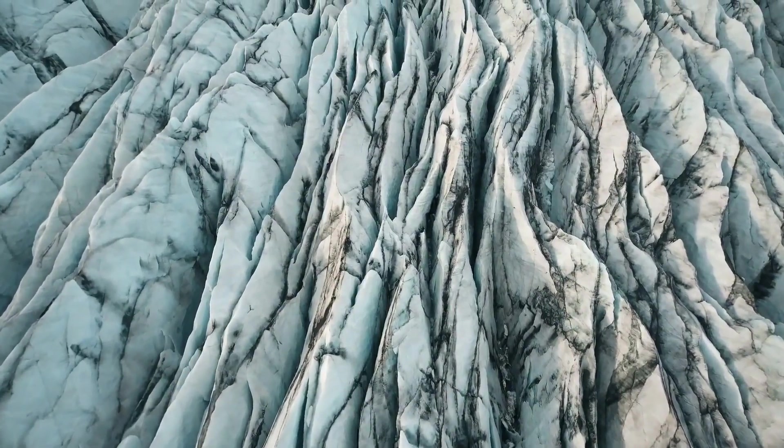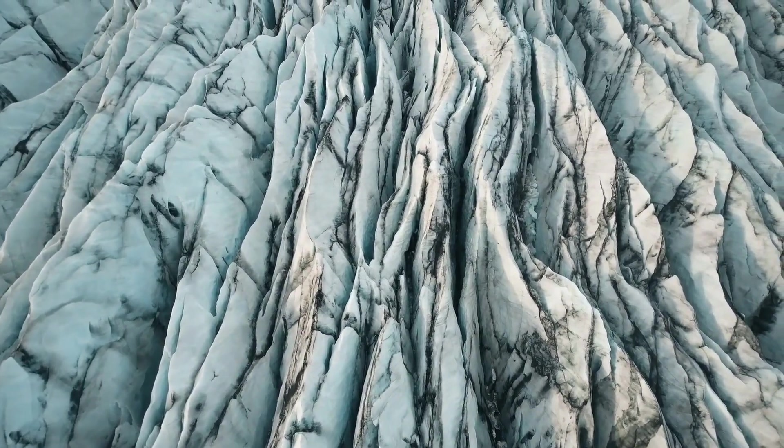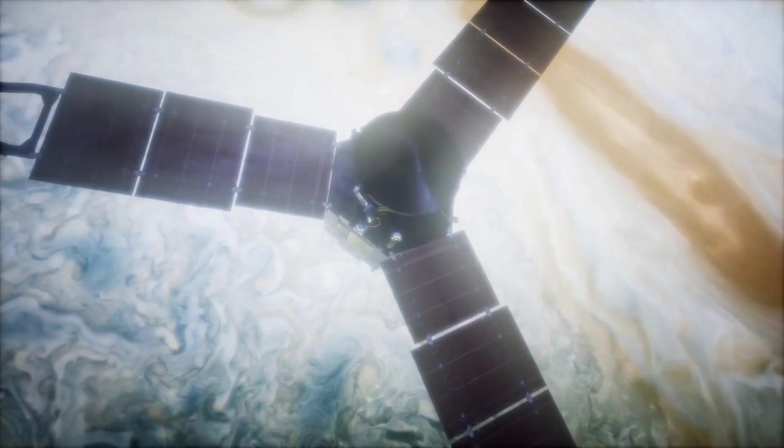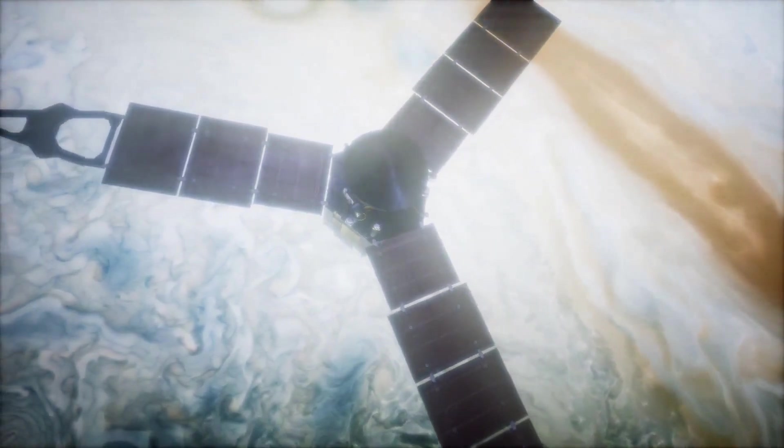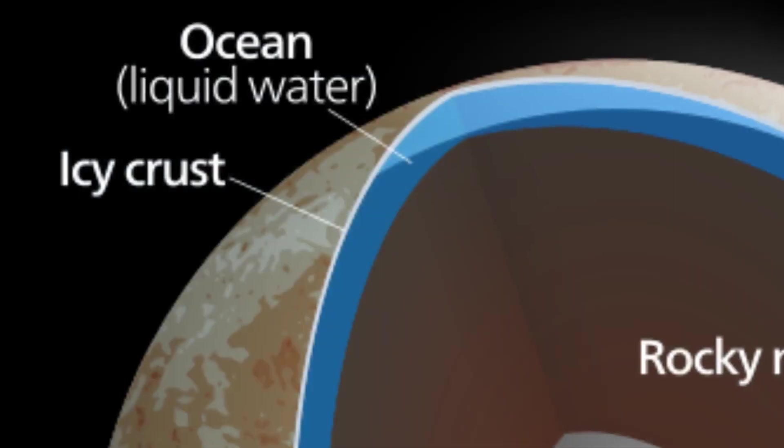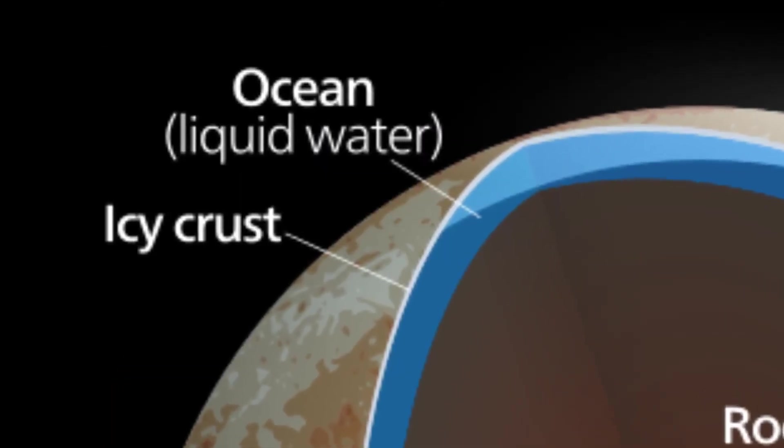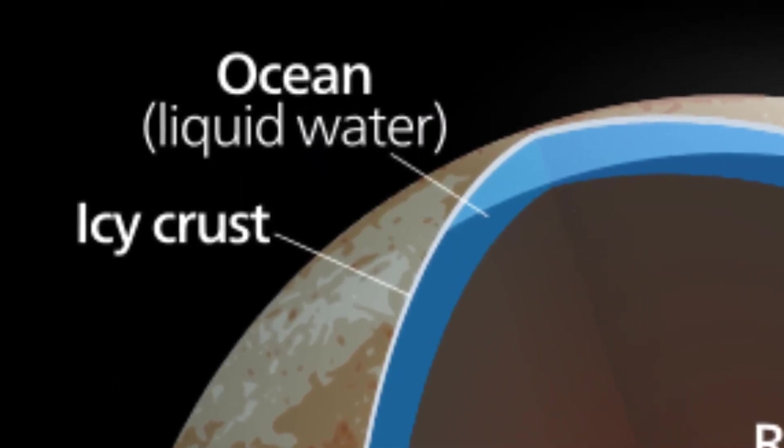One of the main goals of these missions is to establish how thick the ice layer is. Due to its proximity to Jupiter, Europa is extremely radioactive, which makes life on its surface impossible. However, the thick sheet of ice acts as a shield for the ocean underneath, which means life under its surface is possible.